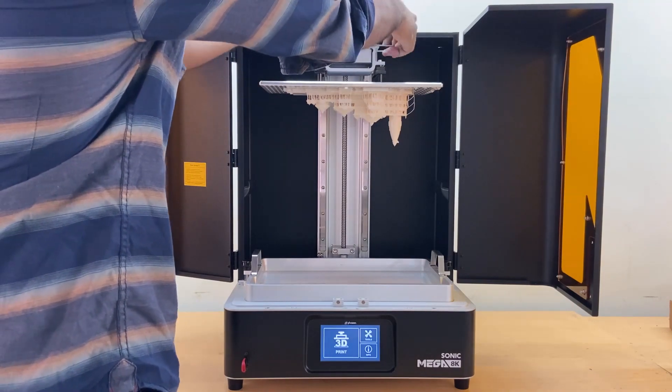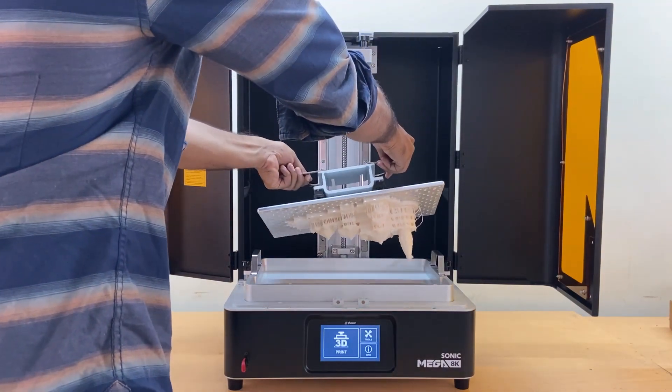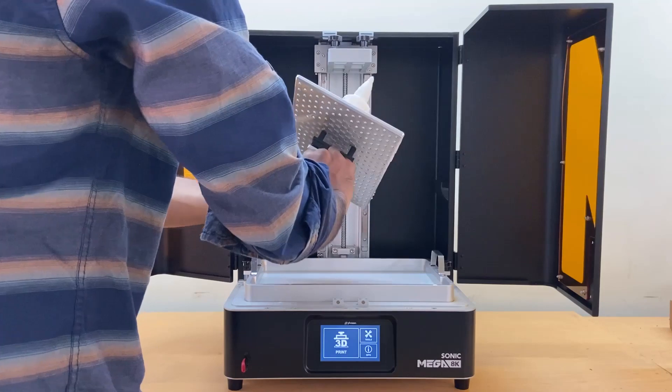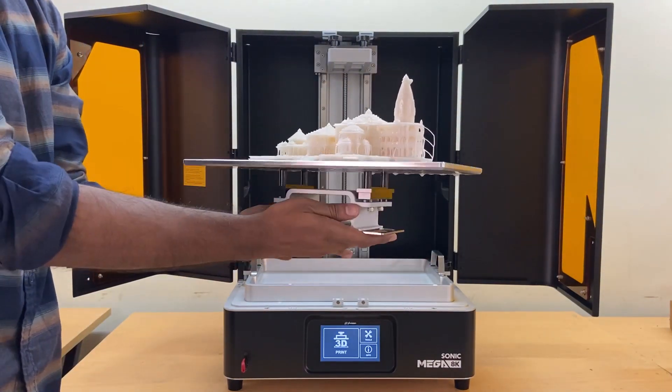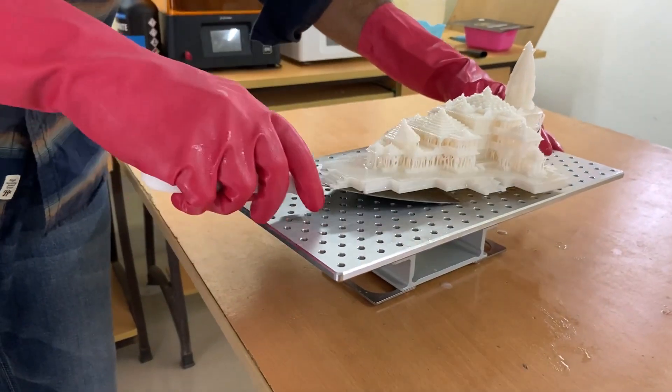Sonic Mega 8K trumps all other 3D printers on the market by showcasing striking details at 43 micrometers, producing 3D models that are almost twice as detailed as other large-scale 3D printers.